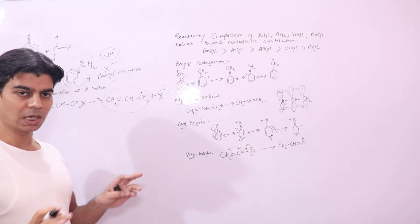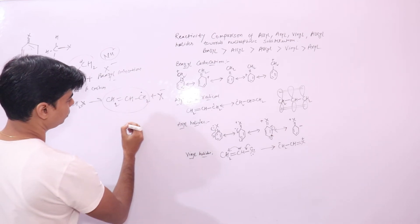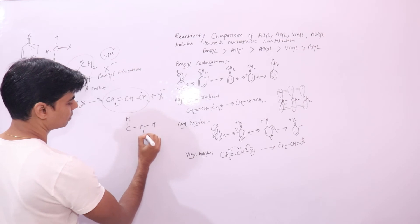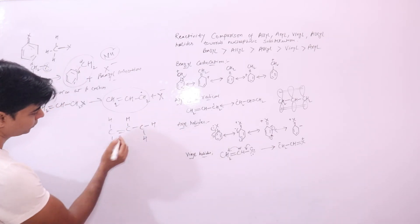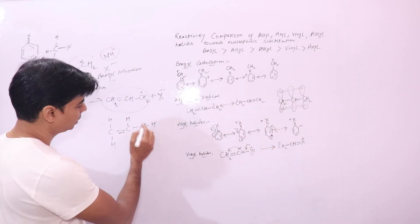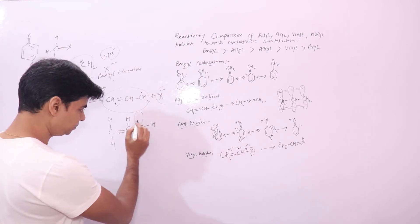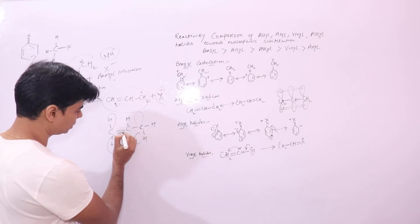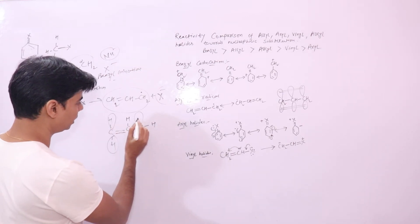Carbon is tetrahedral. Looking at the orbital diagram of the allyl system — when this bond breaks, you will have a P orbital. On the third carbon there is also a P orbital, due to which we have this double bond. Now this P orbital, this P orbital, and this P orbital — the electrons can flow. These P orbitals are in the same plane.